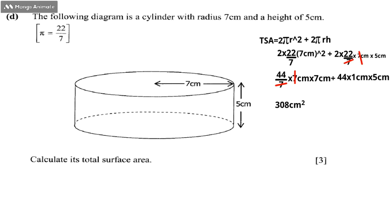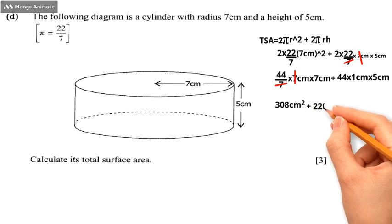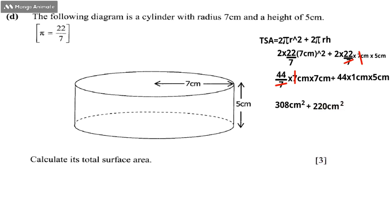We say 44 times 7 equals 308 centimeter times 1 centimeter, which gives us 308 centimeters squared. Then we multiply 44 centimeters times 5 centimeters, which gives us 220 centimeters squared.